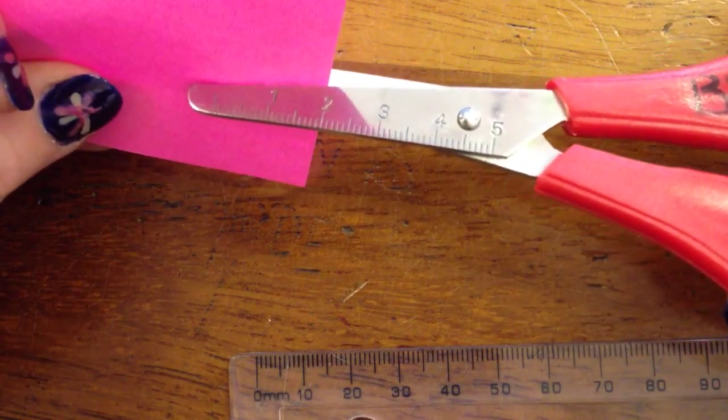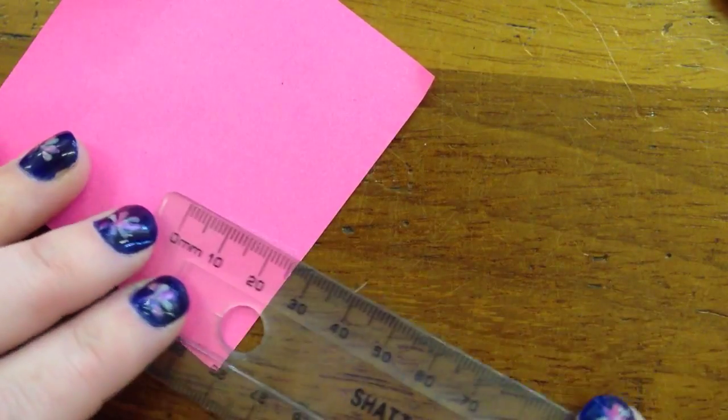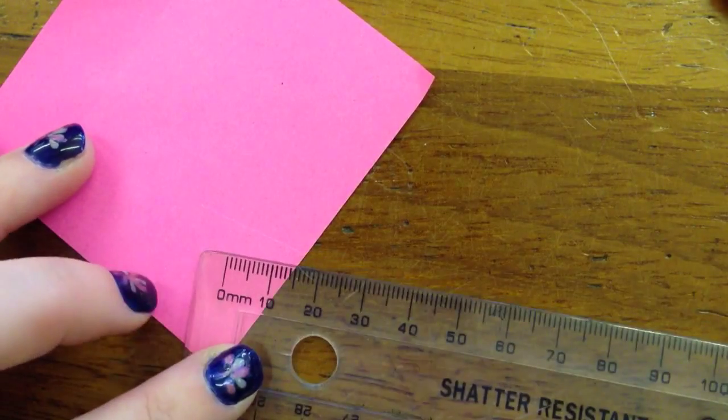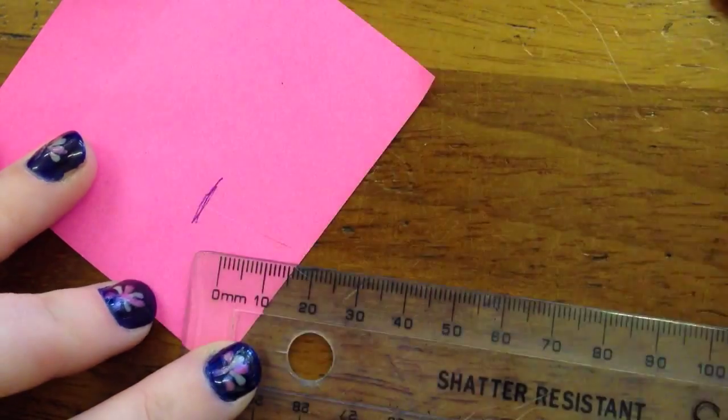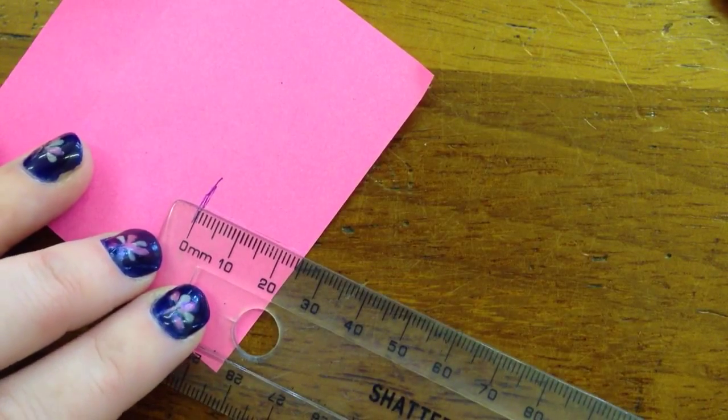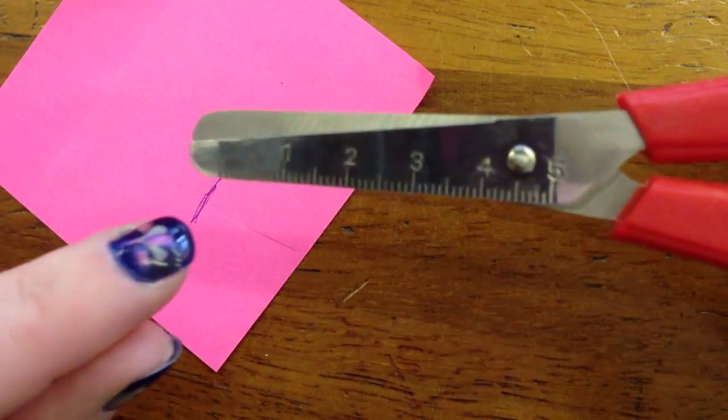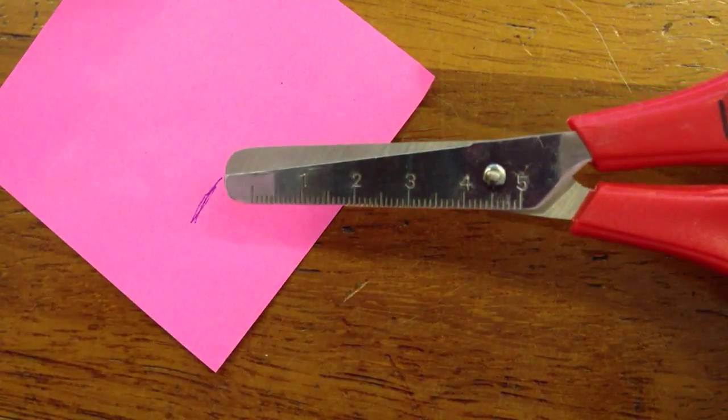Line that up and cut. Now if we actually get a ruler and measure how long that cut is, I'll just mark where it's got up to to make it a bit clearer for you. We can see that cut is actually 2.5cm because the scissors don't start at 0.